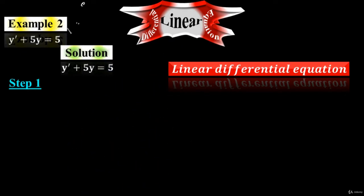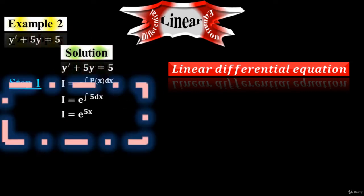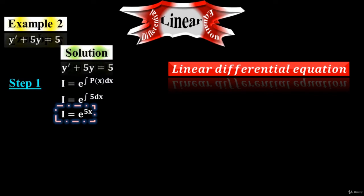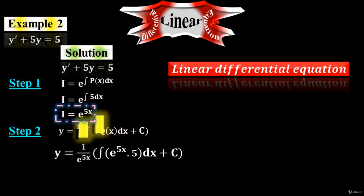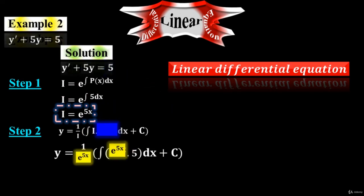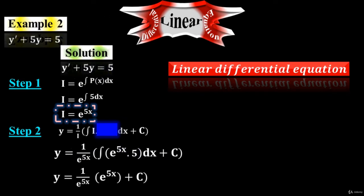Step one: to find the integrating factor. i equals to e to the integral of P of x dx. Substitute the value of P of x, which is 5, and after integration we get the final value of the integrating factor: i equals to e to the 5x. Step two: to find the general solution. The general solution formula is y equals to 1 over the integrating factor times the integral of the integrating factor times Q of x dx, plus c. Substituting the integrating factor e to the 5x and Q of x equals to 5, we get y equals to 1 over e to the 5x times the integral of e to the 5x times 5, plus c.